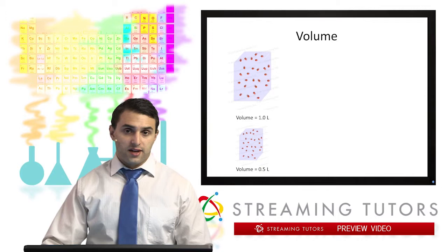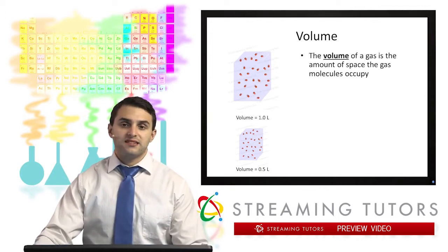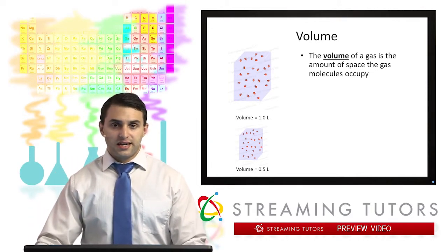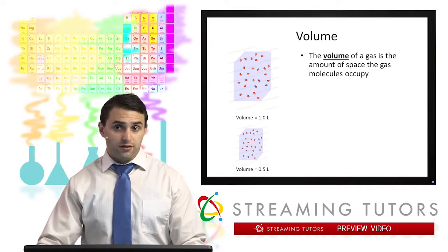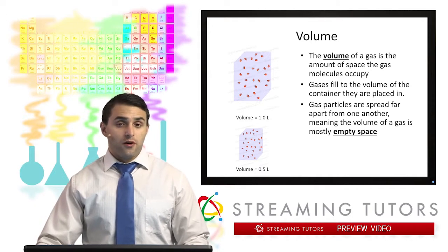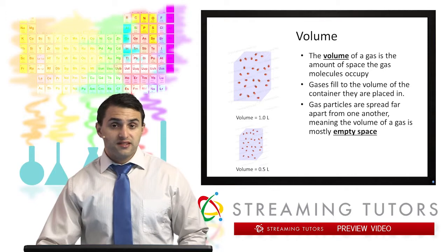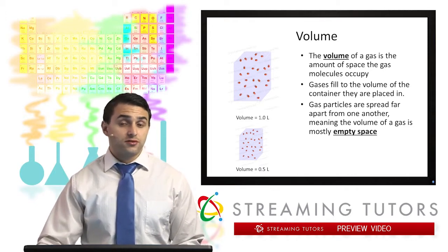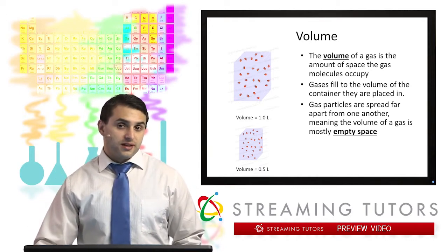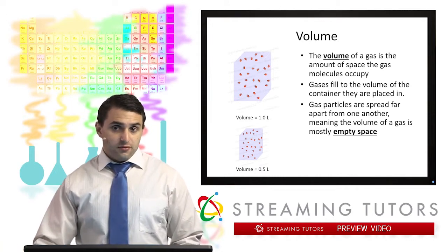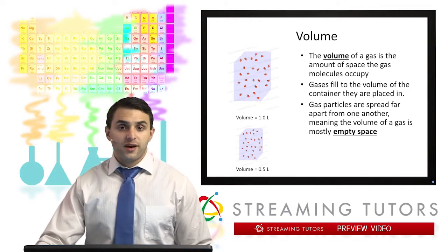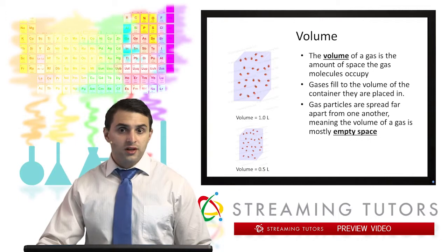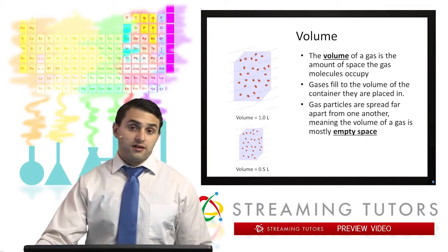Next, we can look at the volume of gas. A gas is going to fill the volume of its container. So if we put a gas in a large container, it's going to have a large volume; in a smaller container, it fills that smaller volume. Gas particles are spread far apart from one another, so the majority of the volume of a gas is actually empty space in between different gas molecules. When we put the same amount of gas in a smaller container, the pressure is going to be greater because there will be more molecular collisions with the walls. When we have a container that can change its volume, for example a balloon, there's going to be a relationship between pressure and volume that we'll explore mathematically in one of the later slides.